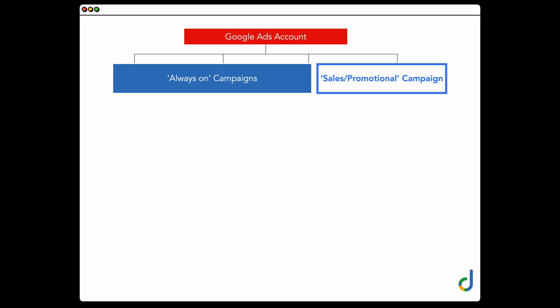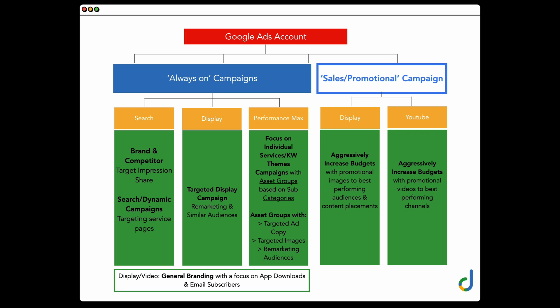Now an example for a service-based business — specifically one with different franchises that had some seasonality. This was an air-conditioning installation company, so they needed campaigns for different seasons. Coming into summer, they had air-conditioning promotional campaigns. Coming into winter, they had heating options promotional campaigns. We separated out some of their services because they were only advertising certain ones for three or four months of the year.